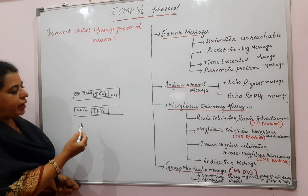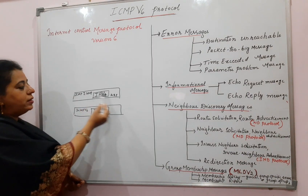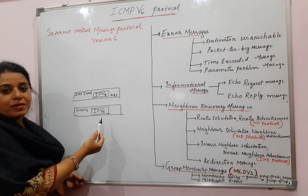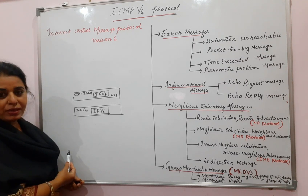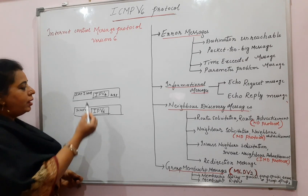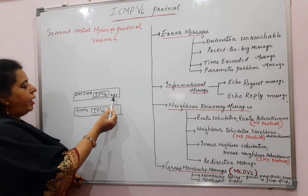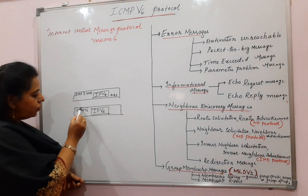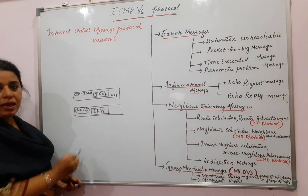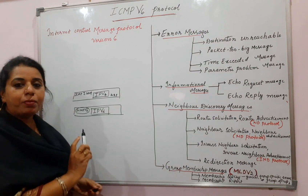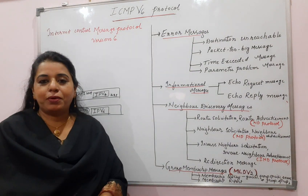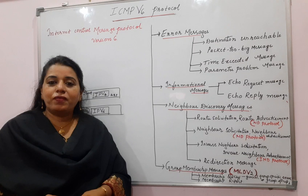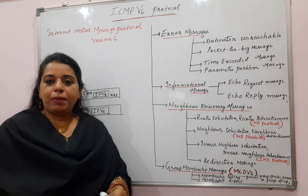You must be wondering that for IPv4 you had three protocols in the network layer, but here for IPv6 you have only ICMPv6. The functionalities of IGMP, ARP, and ICMP are all put together in ICMP version 6. Hence only one protocol is needed here in order to support IPv6.